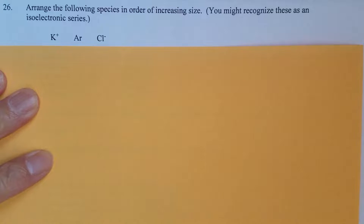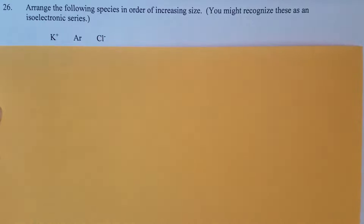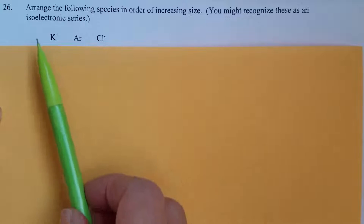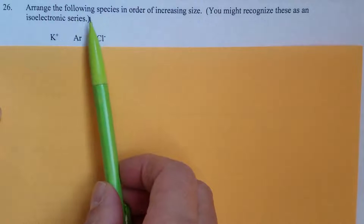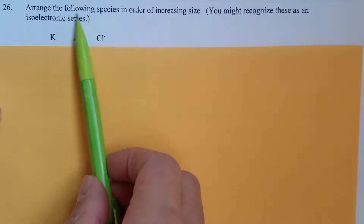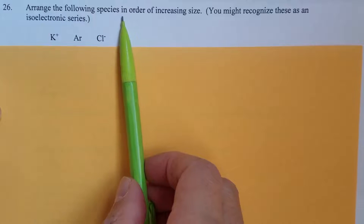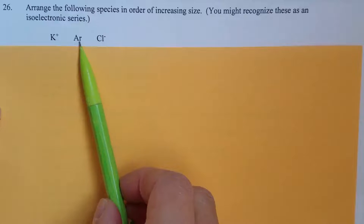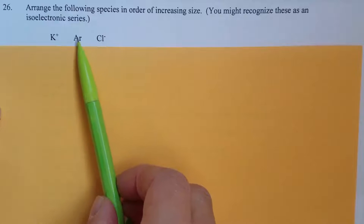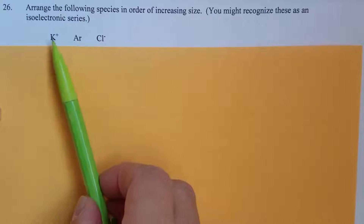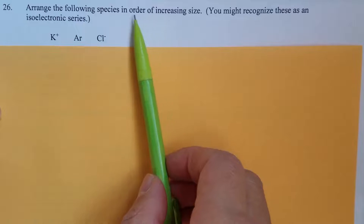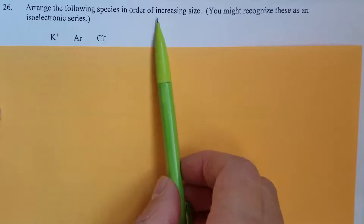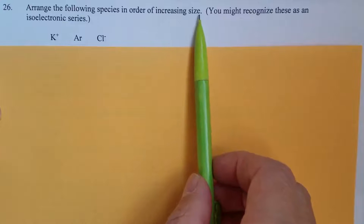Practice exam 3, question number 26. So ordering the following species — either atoms or ions — in order of increasing size.